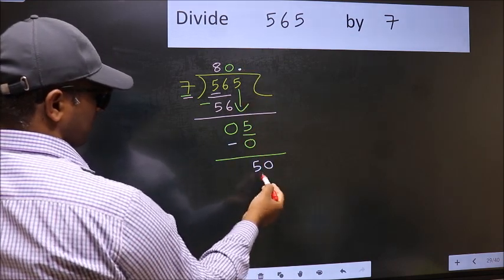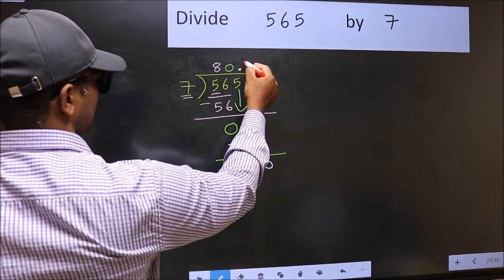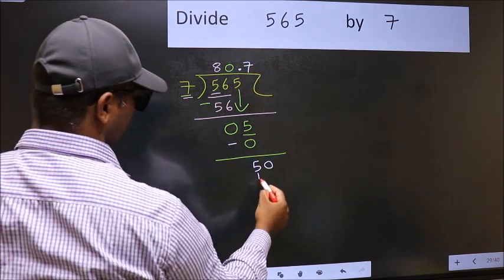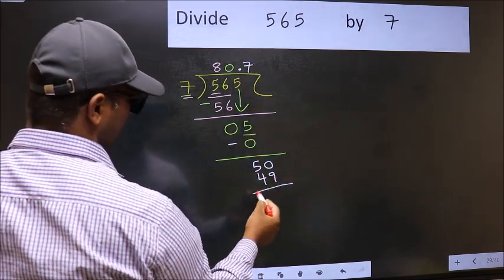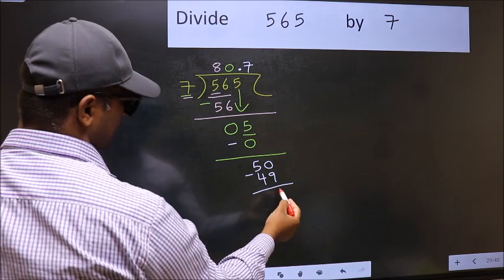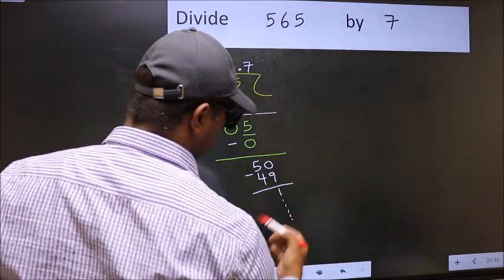So 50. A number close to 50 in the 7 table is 7 times 7 is 49. Now you should subtract. We get 1, and continue the division.